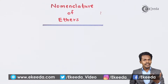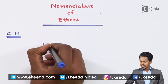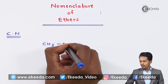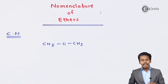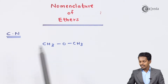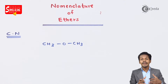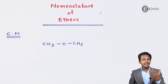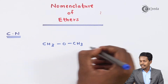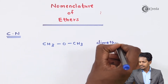First of all let me talk about the common name. For example, if we have an ether like CH3OCH3, the name ends with 'ether' whenever it comes to the common name. As you can see, there is a methyl group and again there is a methyl group. So we represent the total number of alkyl groups across the oxygen atom — in this case two methyl groups. Therefore the common name is dimethyl ether.